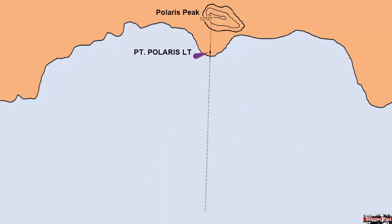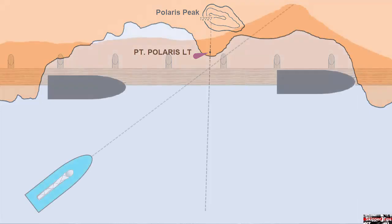Use transits when approaching landfall to help you stay on course. Here you can see we use this mountain range lined up with the lighthouse to help us stay on course as we approach the coastline. This will be especially useful if approaching with the wind off the beam, where we could be pushed to the side of our sailing track line.